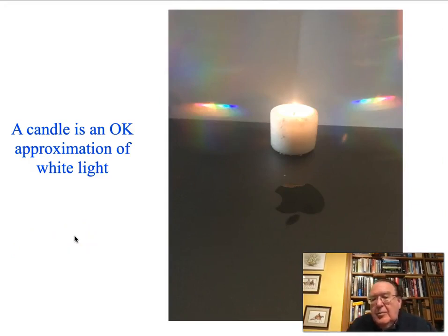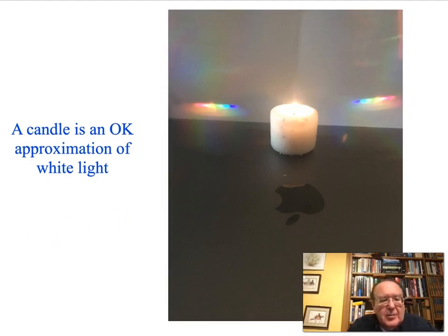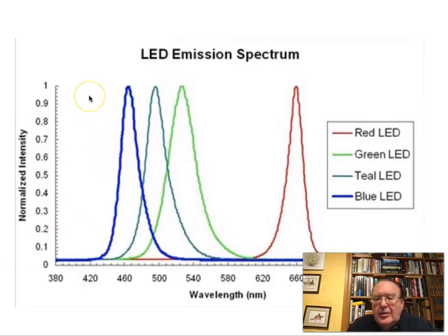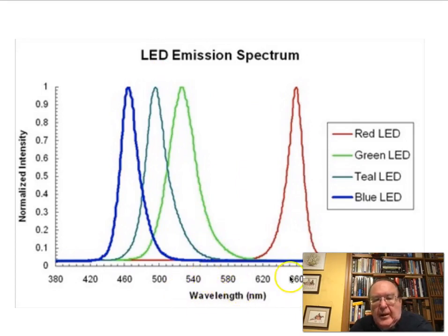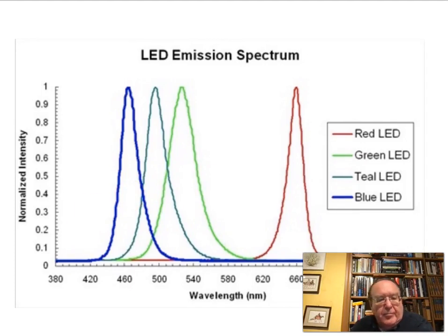A candle also has a spectrum — candlelight isn't exactly sunlight but it's pretty good white light. We're going to be using handheld light-emitting diodes. They give off a range of wavelengths: the red LED has a wavelength of around 650 nanometers, the green is around 530 nanometers, and the blue is around 400–405 nanometers.